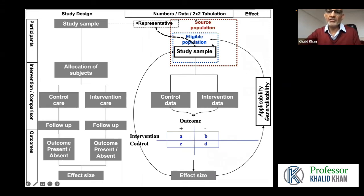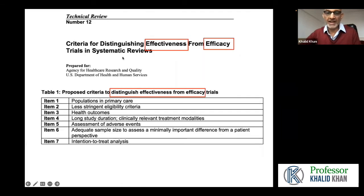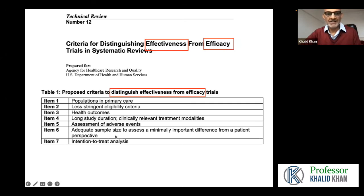Colleagues who asked about the difference between efficacy and effectiveness — is the difference clearer now? An effectiveness study will have wider populations, less strict eligibility criteria, health outcomes relevant to the public, long duration, assessment of adverse effects, and intention-to-treat analysis. All of these features help create an effectiveness result. Now, having carried out your search with several studies available, you will read the text and tables and extract the data: how many people were in the treatment group, how many in the control group, and how many had the outcome.